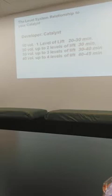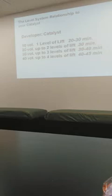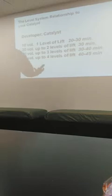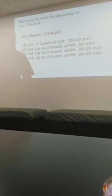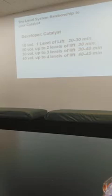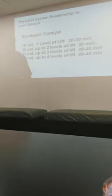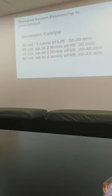Step three is determining what level of developer to use to achieve the desired level of lightness. That developer is going to leave a remaining pigment in the hair — that's the canvas you're painting on. You're not coloring what you see at the natural level; you're coloring where you're lifting to. If she's lifting to a level six or seven, I need to know what the remaining pigment will be at that level, and I factor that in when determining step four — the tone.